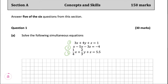We want to make two more equations, so we're going to choose any two equations. I'm going to choose equation one and equation two. Then we have to choose a variable to eliminate — I'm going to choose z. We're going to multiply the first equation by three so that the two z coefficients are equal but opposite.